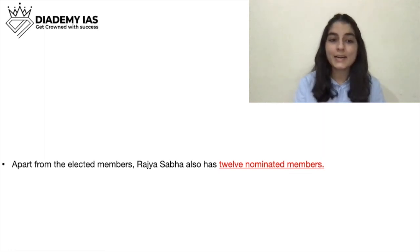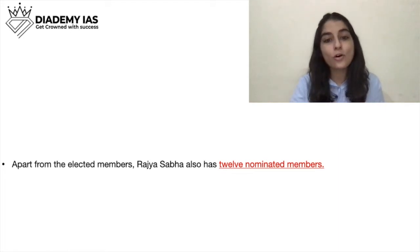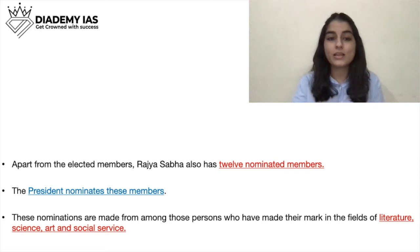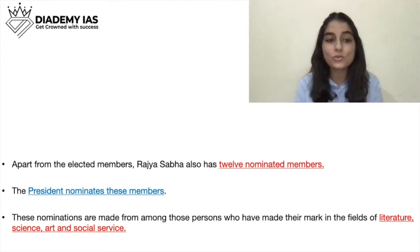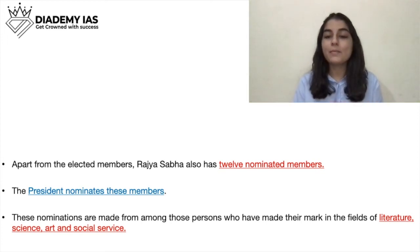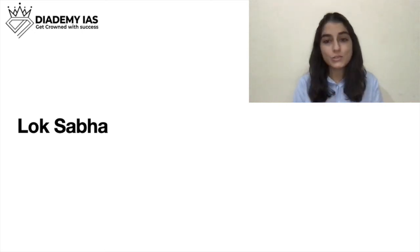Apart from the elected members, Rajya Sabha also has 12 nominated members. Out of the 245 total members, 12 are nominated by the President. These are people who have made their mark in the fields of literature, science, art, and social service. For example, Sachin Tendulkar and Rekha were nominated members of Rajya Sabha. Remember these fields — a question is often asked about this.